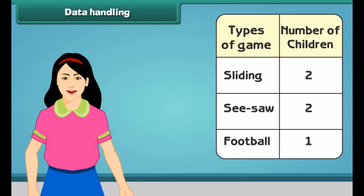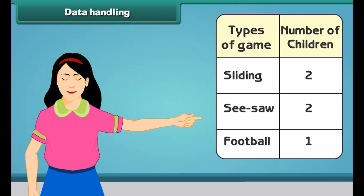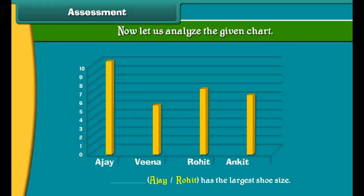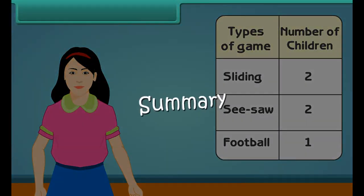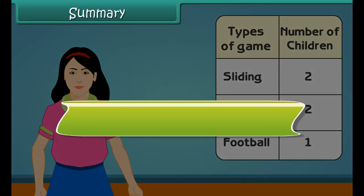The chart represents the information in the form of a picture. Therefore, we can get information by looking at the chart carefully. Now let us analyze the given chart. In this chart, four students have measured their shoes on the paper. They had cut and pasted the paper strips as shown in the given chart. Now answer the following questions by clicking on the correct options.